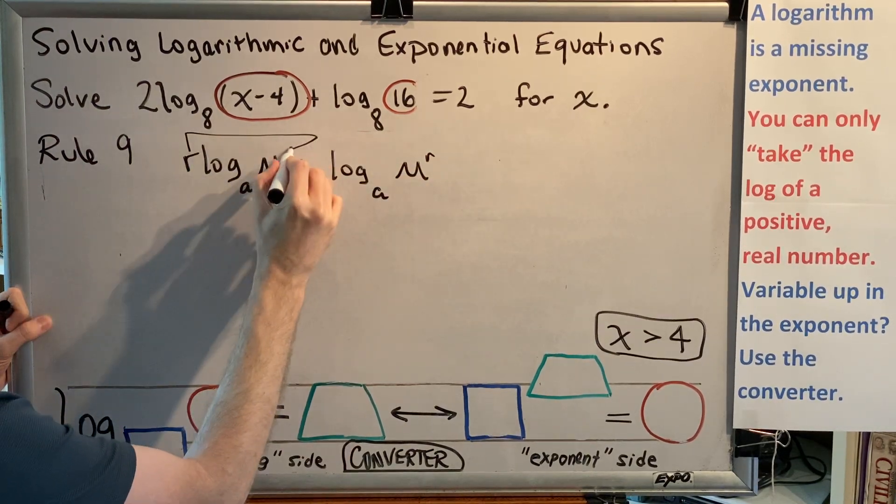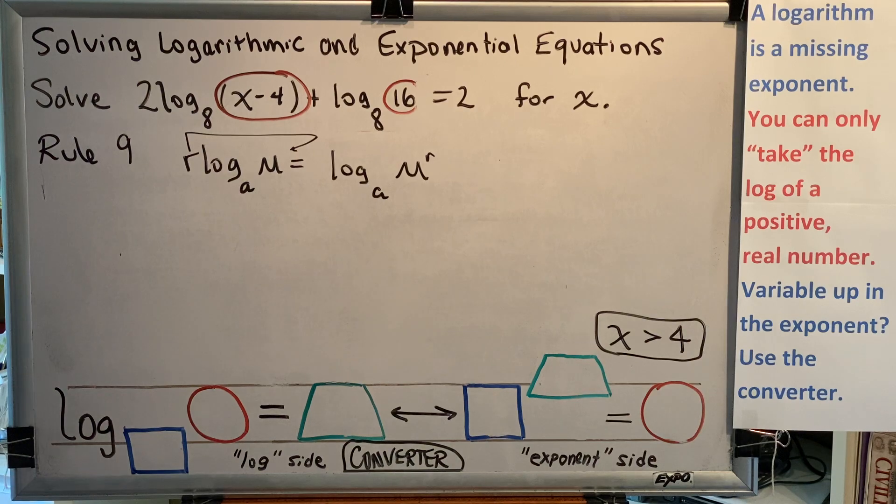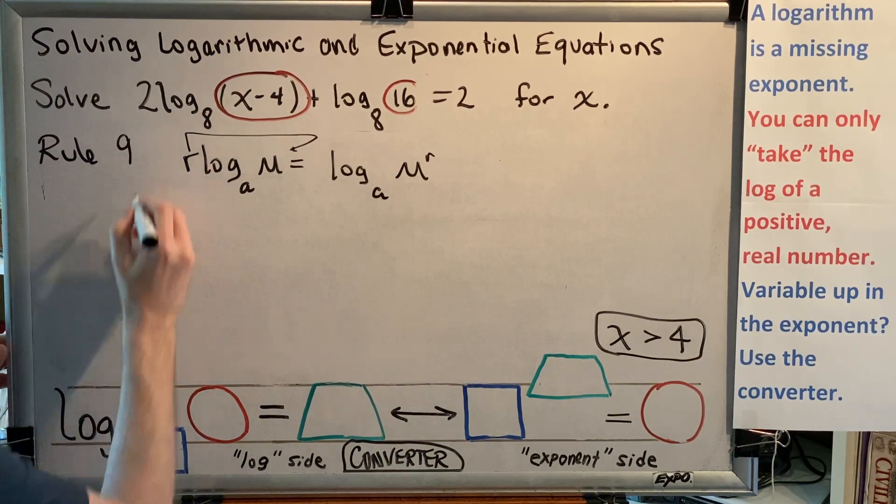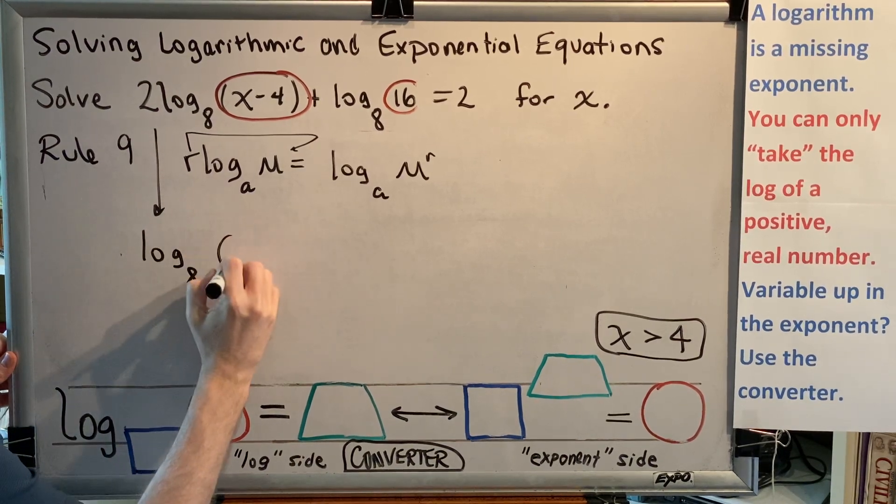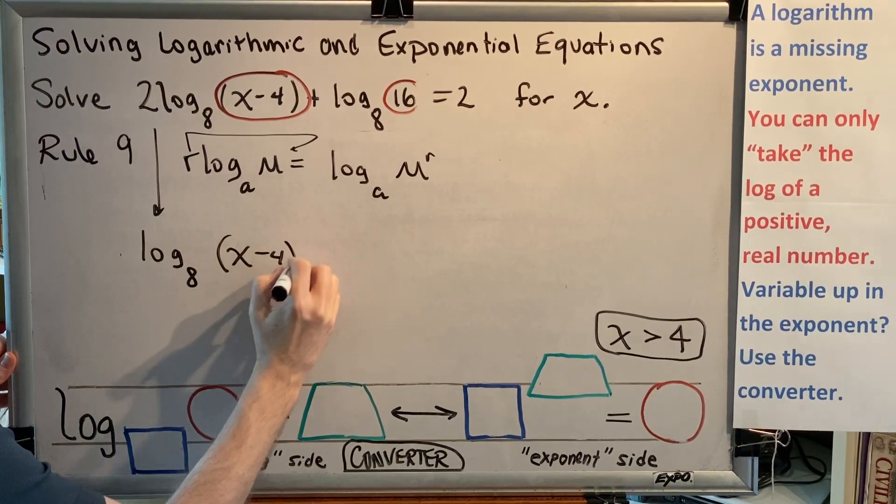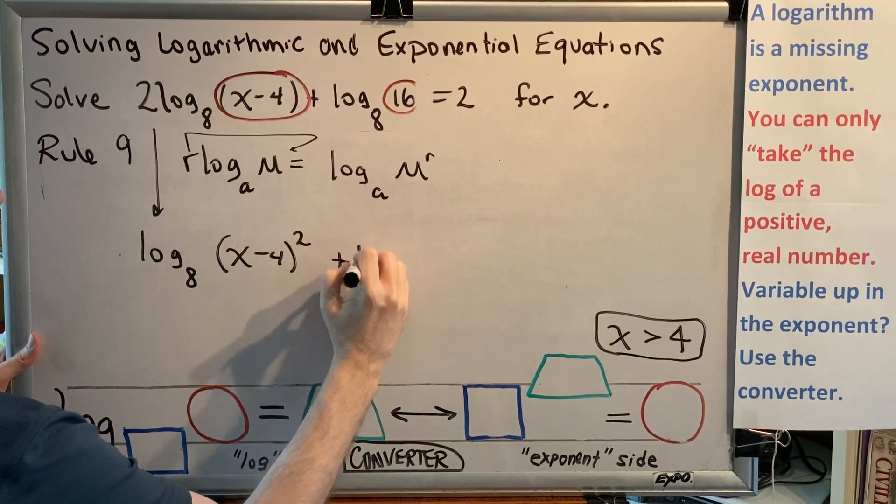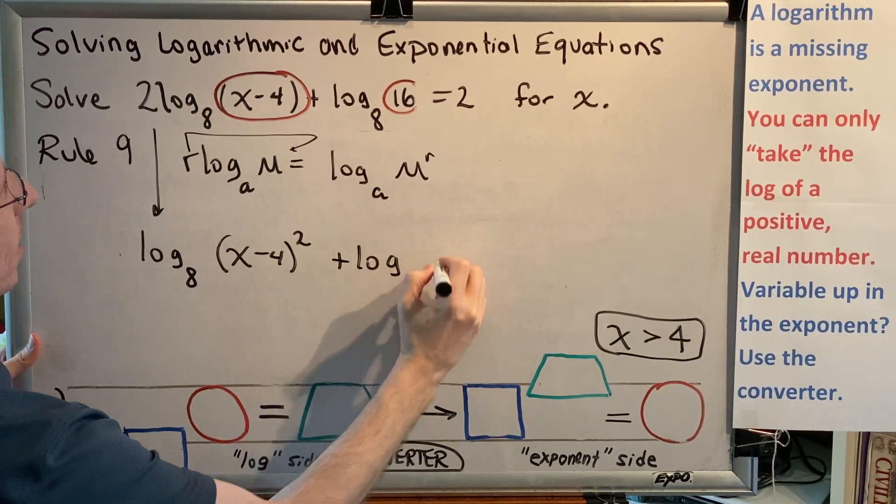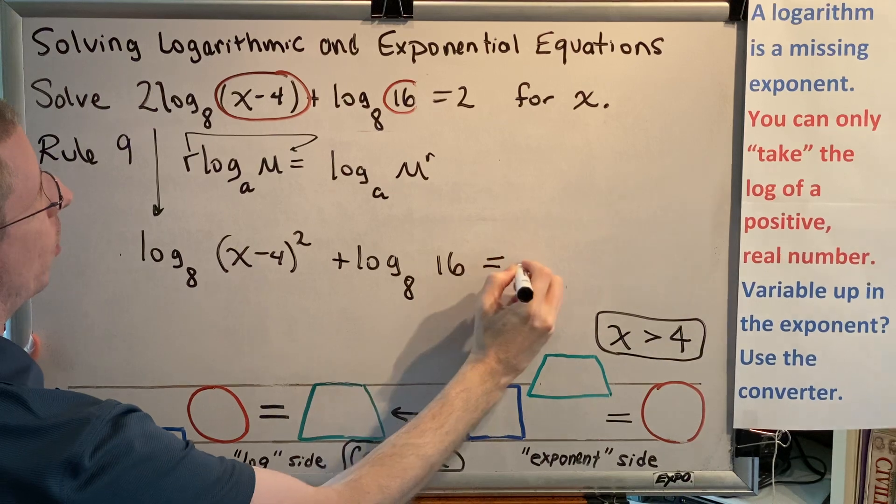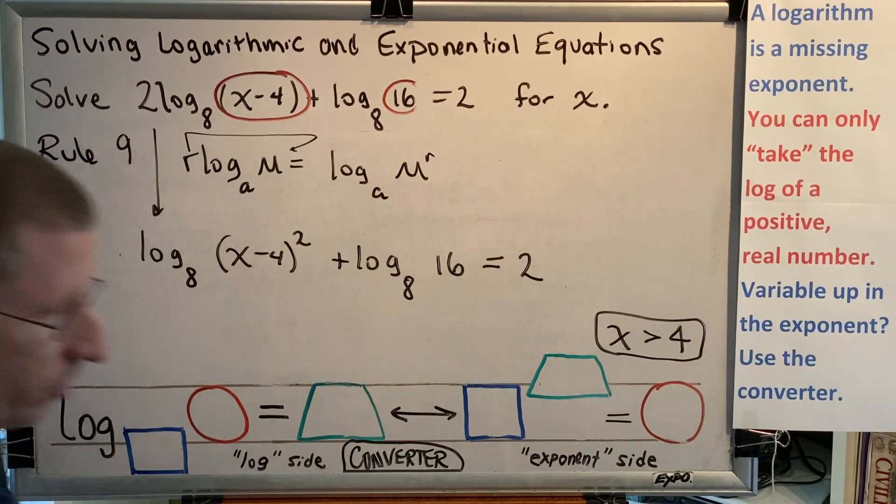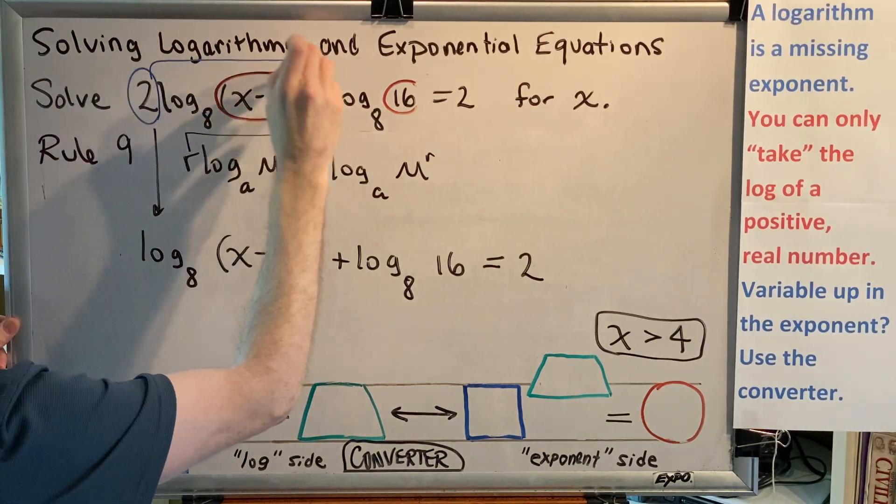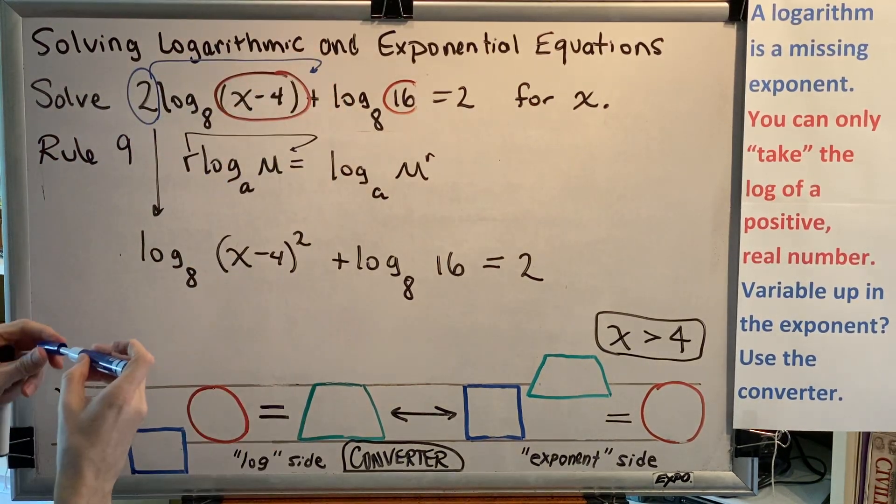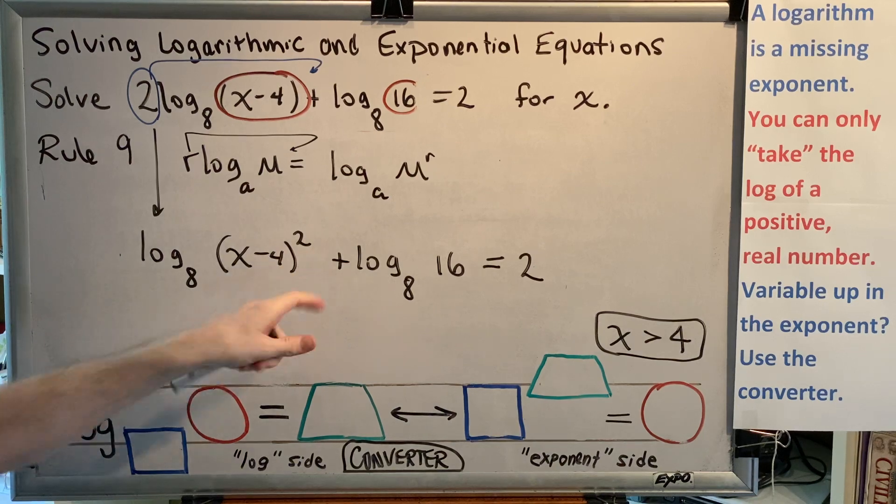Rule 9 says r log base a of m is the same thing as log base a of m to the r power. In other words, the r can go from outside of the brick to inside of the brick, where it becomes the exponent of the argument. So, by using rule 9, we're going to write log base 8 of the difference (x minus 4) squared, plus log base 8 of 16 equals 2. This 2 moves to become the exponent of the log argument. And it shows up here.